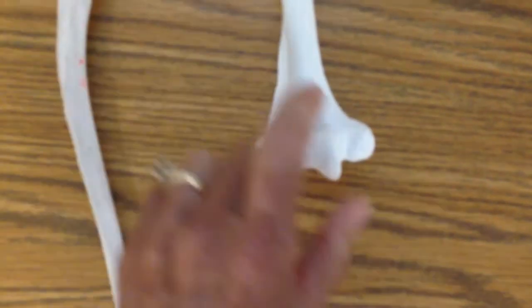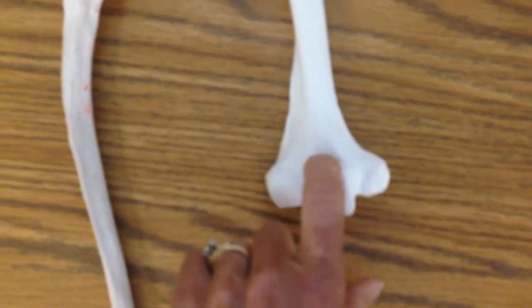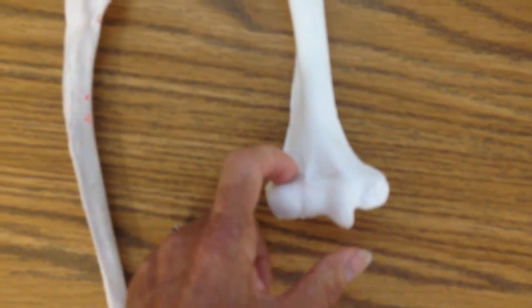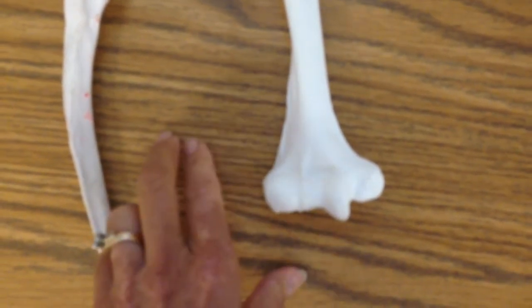This, on the ulna, is the coronoid. Well, on the humerus, you have the coronoid fossa, and a radial fossa, where the radius fits in.